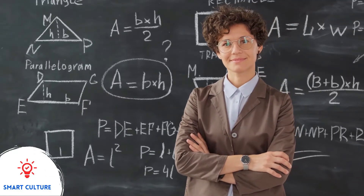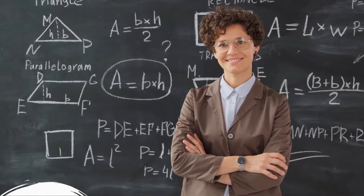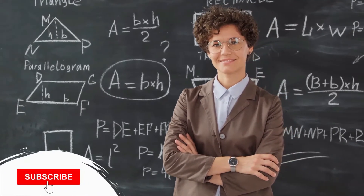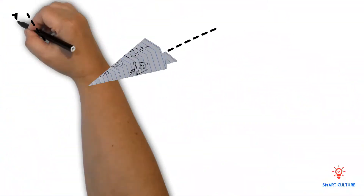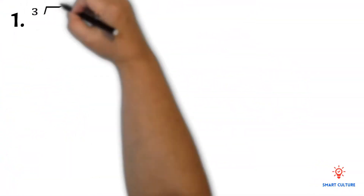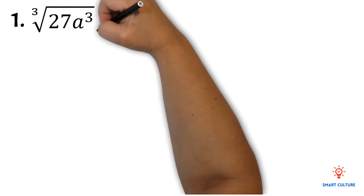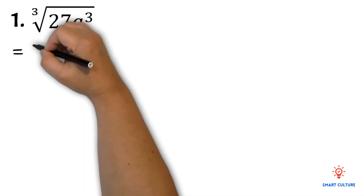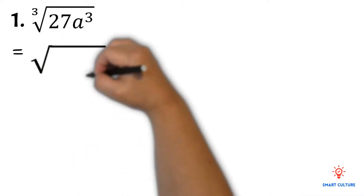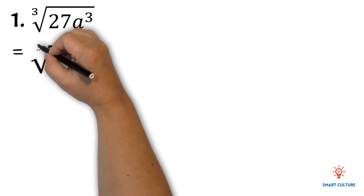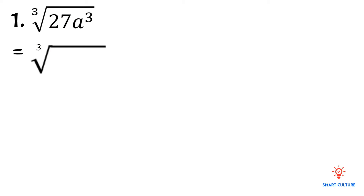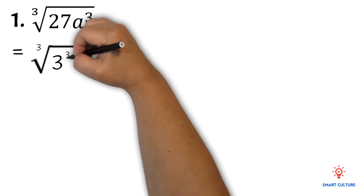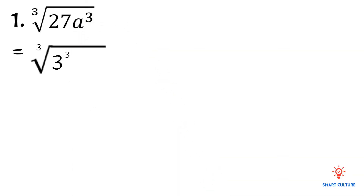Smart Culture Mathematics. Let's take a look at this example. We have to find the cube root of 27a to the power of 3. What we'll do first is write the number 27 as a product of its factors. We can write 3 cubed.